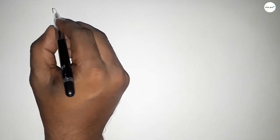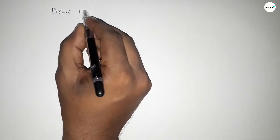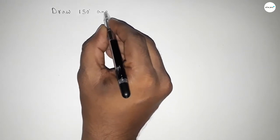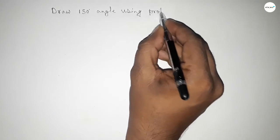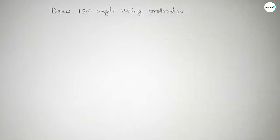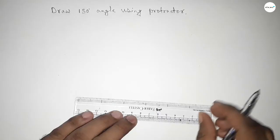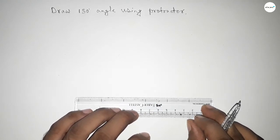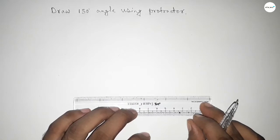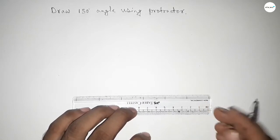Hi everyone, welcome to SI Share Classes. Today in this video we have to draw a 150 degree angle by using a protractor. So let's start the video. First of all, draw a line of any length here.